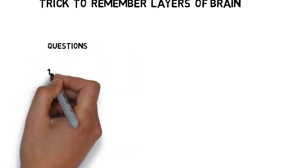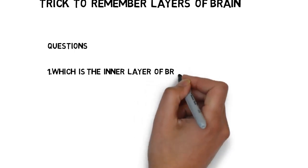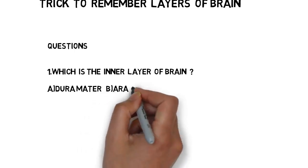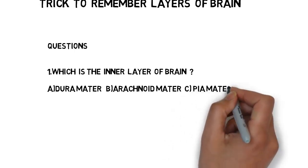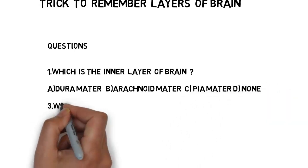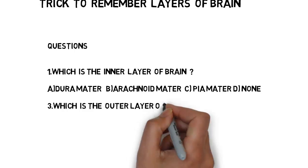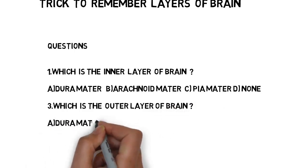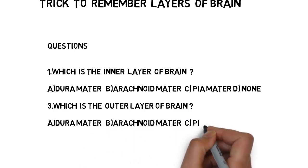Let us see some questions which were asked in previous government exams. First one: which is the inner layer of the brain? Option A: Duramater. Option B: Arachnoid Matter. Option C: Piamater. Option D: None. Second one: which is the outer layer of the brain? Option A: Duramater. Option B: Arachnoid Matter. Option C: Piamater. Option D: None.